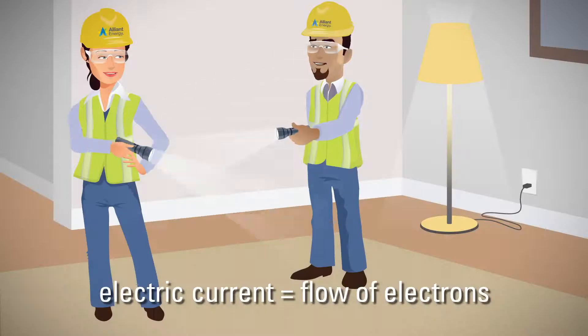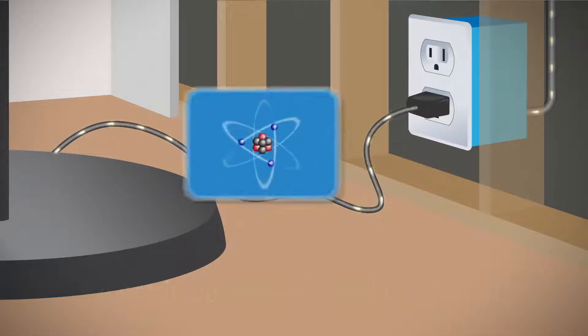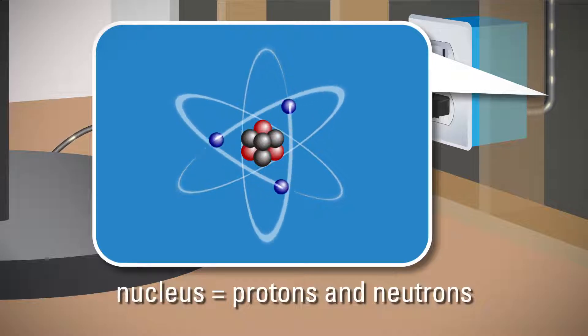What you may not know is that electric current is a flow of electrons. Yep, electrons. Those teeny tiny particles that orbit around an atom's nucleus.